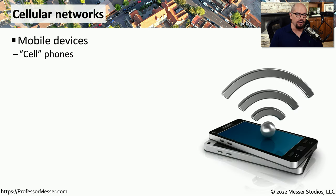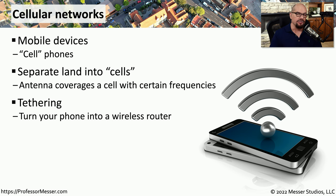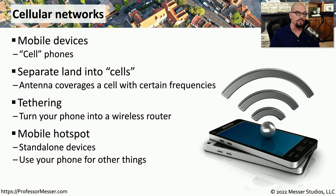Many of us use cellular networks for internet connectivity, especially if we're away from our office or our home. These use the mobile networks that you would commonly associate with a cell phone, but instead of sending voice over that network, we're sending data. One way to provide this connection is through tethering, where we would physically connect to our phone via USB or through Bluetooth and use our phone as an internet connection. Many phones also support the ability to become a hotspot, enabling 802.11 capabilities so anything in range can use that 802.11 network through your phone to access the internet.